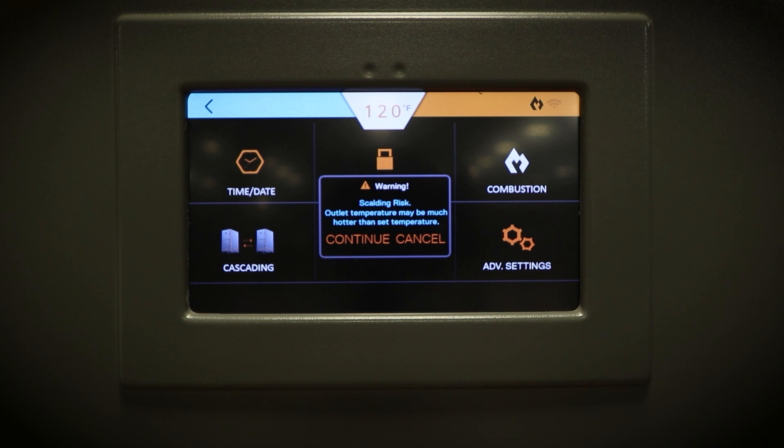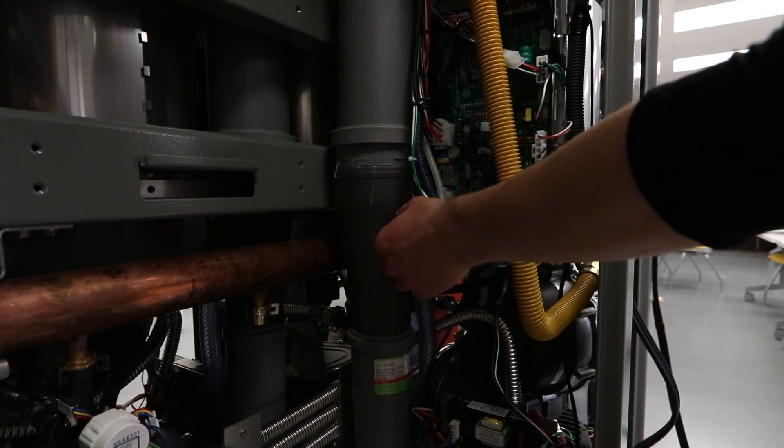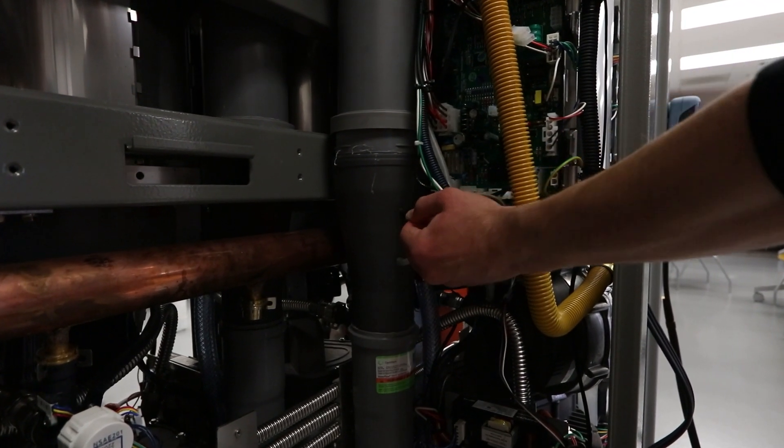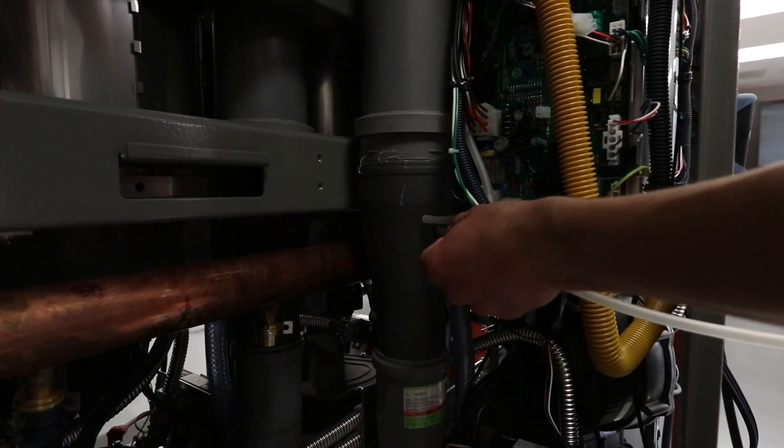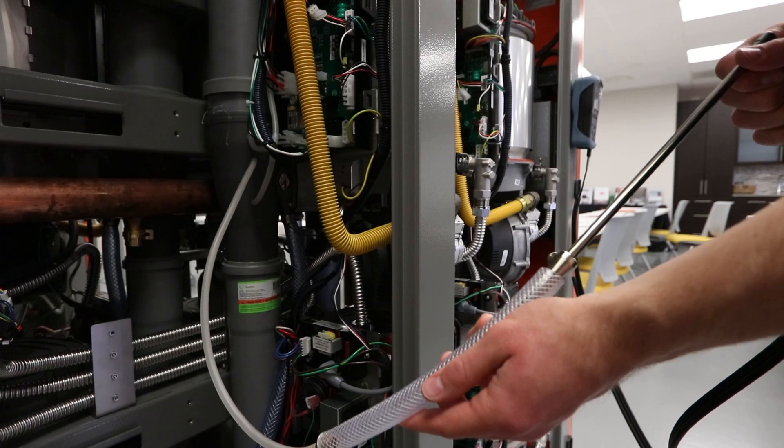Calibrate your combustion analyzer to the fuel type of your unit, either natural gas or propane. Locate the air switch ports on the side cast of the heat exchanger. Remove the top port and place a piece of tubing onto the port. Place the analyzer probe into the opening on the other end of the tubing.